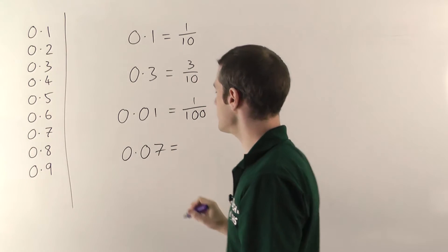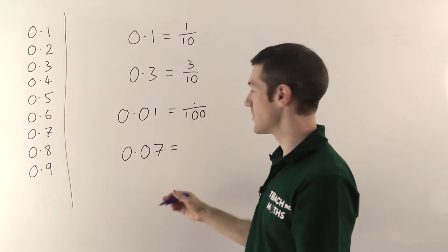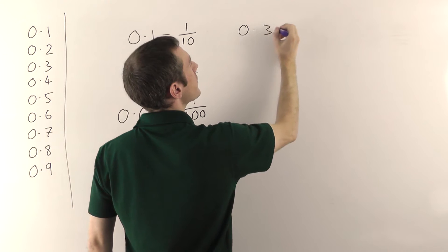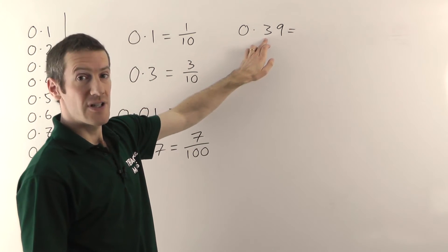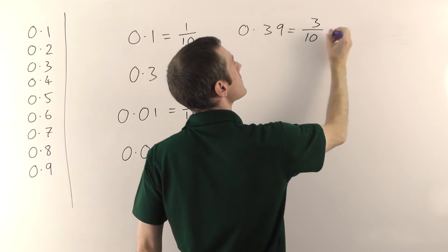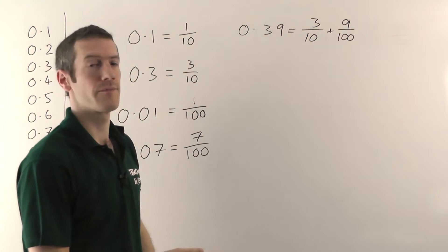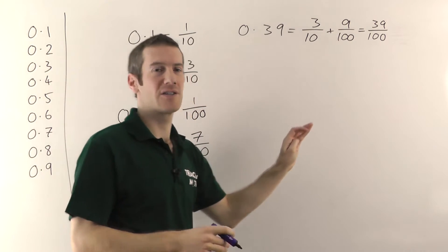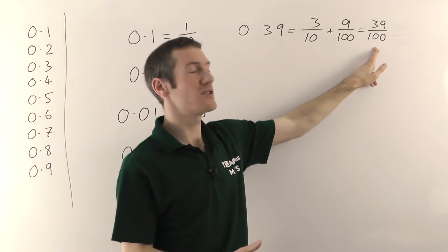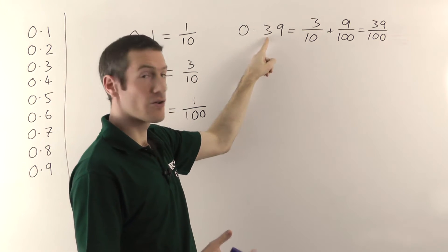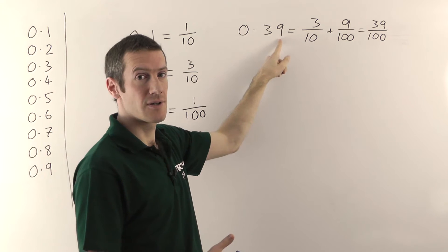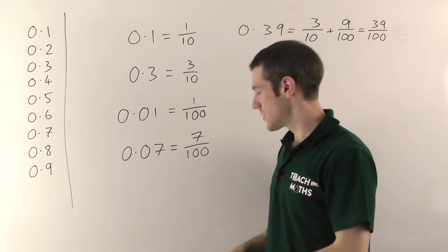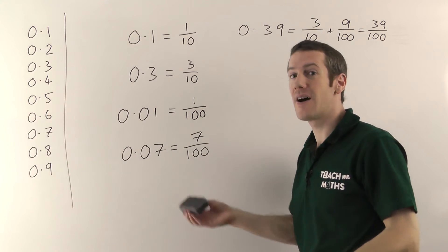So if we had 0.07, that would be no units, no tenths, seven hundredths — so as a fraction, you'd write it as 7 over 100. Let me do a slightly different example: if we had 0.39, here I've got 3 tenths and 9 hundredths. You could write that as 3 tenths plus 9 hundredths, and when you add the fractions you get 39 hundredths. So 0.39 can be written as 39 over 100. The places the numbers sit in — the columns — give you the value of the decimal, and it translates directly to fractions. That's where they come from; they've been invented and defined to be the way they are.